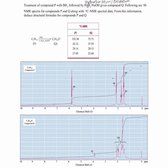Following our HNMR spectra for compounds P and Q along with C13 NMR spectral data, from this information deduce structural formulas for compounds Q and P. Now what kind of compounds will undergo hydroboration followed by oxidation? Normally it will be either an alkene or alkyne. So let's first find out whether this compound is an alkene or alkyne.